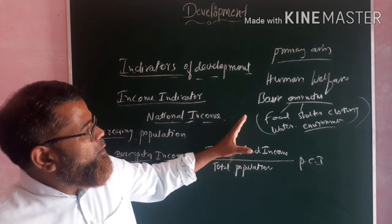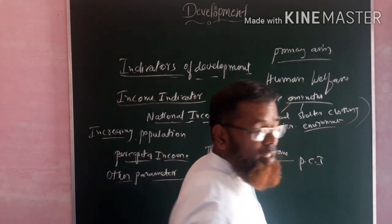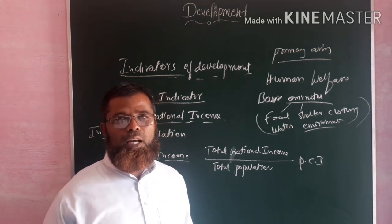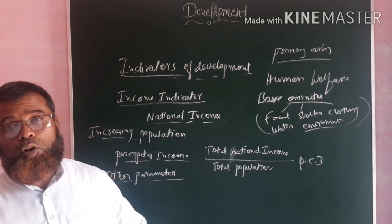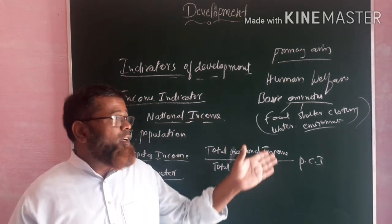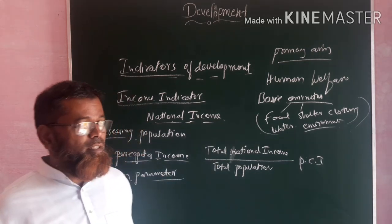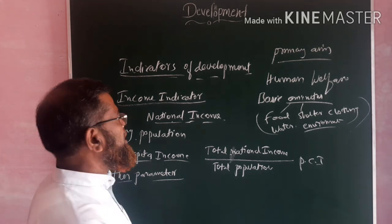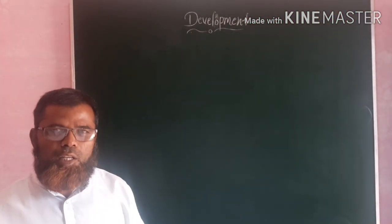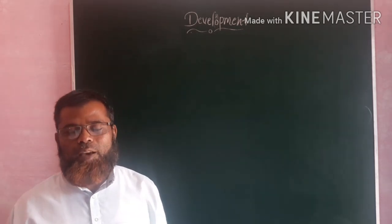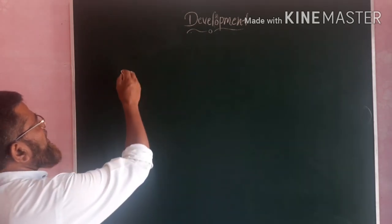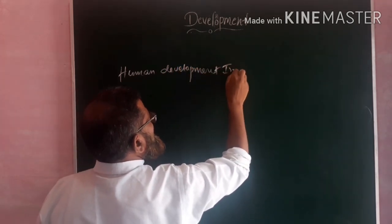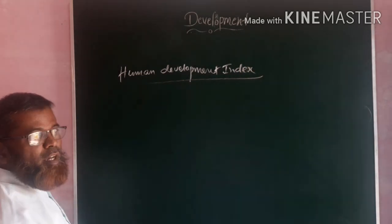An increase in a country's income doesn't mean that everyone is getting these basic amenities, because some are having billions of rupees, some millions, and some are living below the poverty line. In India, more than 20 percent of the people are living below the poverty line. On the basis of income alone, we cannot decide that they are having all basic amenities. That's why a new concept — the Human Development Index — is needed as another parameter to measure development.